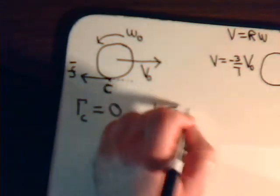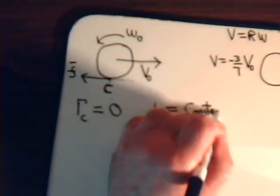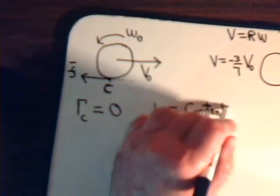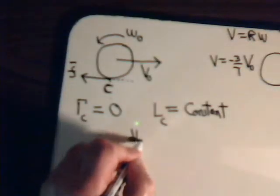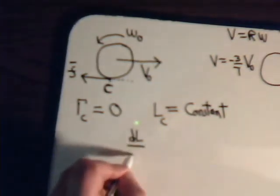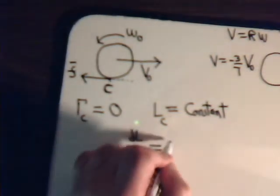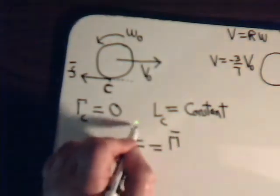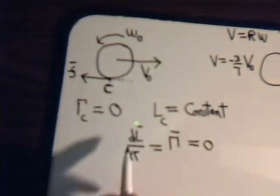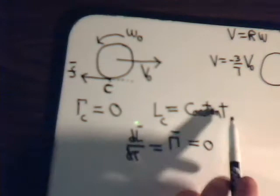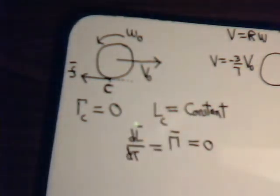The angular momentum at C is a constant because the time derivative of angular momentum equals the torque. If the torque is zero, the time derivative is zero, and therefore the angular momentum itself is a constant.